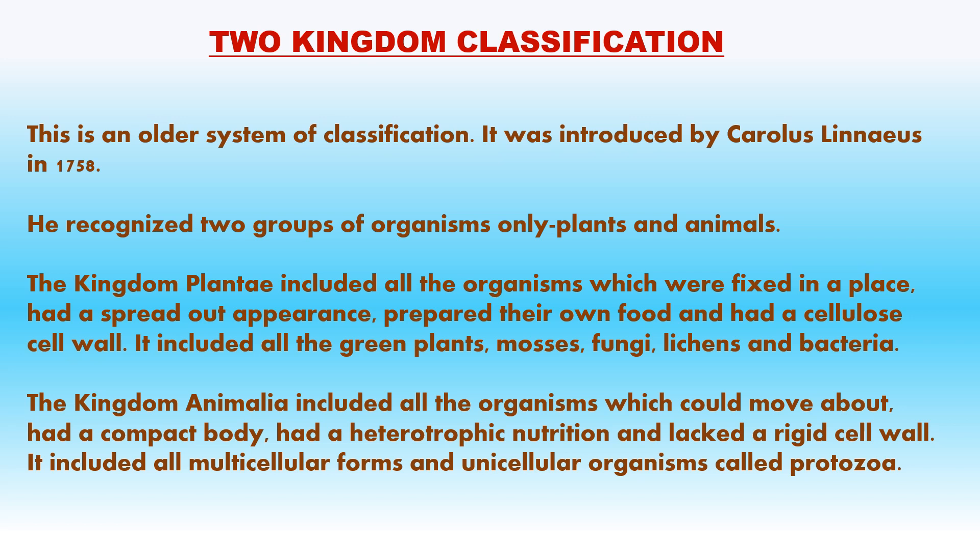The kingdom Animalia included all organisms which could move about, had a compact body, had heterotrophic nutrition and lacked a rigid cell wall. It included all multicellular forms and unicellular organisms called protozoa.